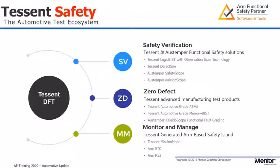With the introduction of Tessent Safety, it became clear that when developing automotive ICs, there's a very strong link between test and functional safety. The in-system test solution makes an extremely good functional safety mechanism, and we are seeing a lot of these functional safety requirements sitting within our customers' DFT teams. Therefore, to provide an end-to-end customer solution encompassing both functional safety and DFT, we created the Tessent Safety ecosystem, incorporating required technologies through both internal and external partners.